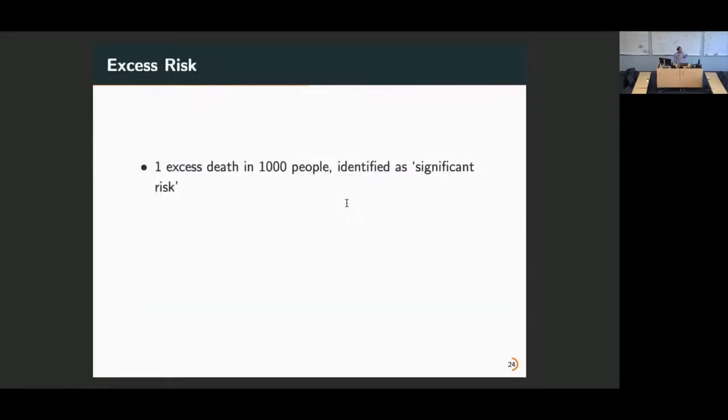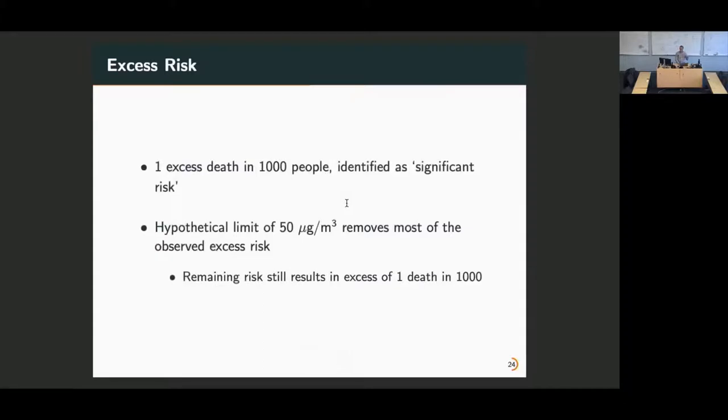In summary, how do we interpret these findings? In the famous Benzene Supreme Court case, somewhere in the judge's verdict, it was stated that one excess death in 1,000 people is identified as significant risk. In this case, the hypothetical limit of 50 micrograms removes most of the observed risk for both lung cancer and non-malignant respiratory disease, but that remainder, the difference between the 50 and the always unexposed, is still about one excess death in 1,000. What that tells us is that 50 micrograms per meter cubed limit may be removing most of that risk, but it's not necessarily a safe limit. It does not remove all risk.